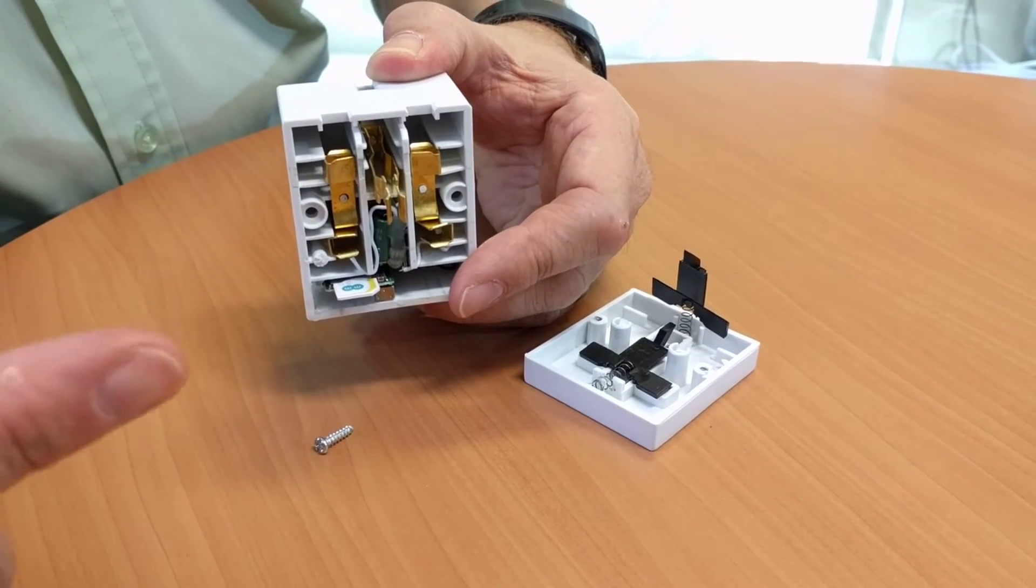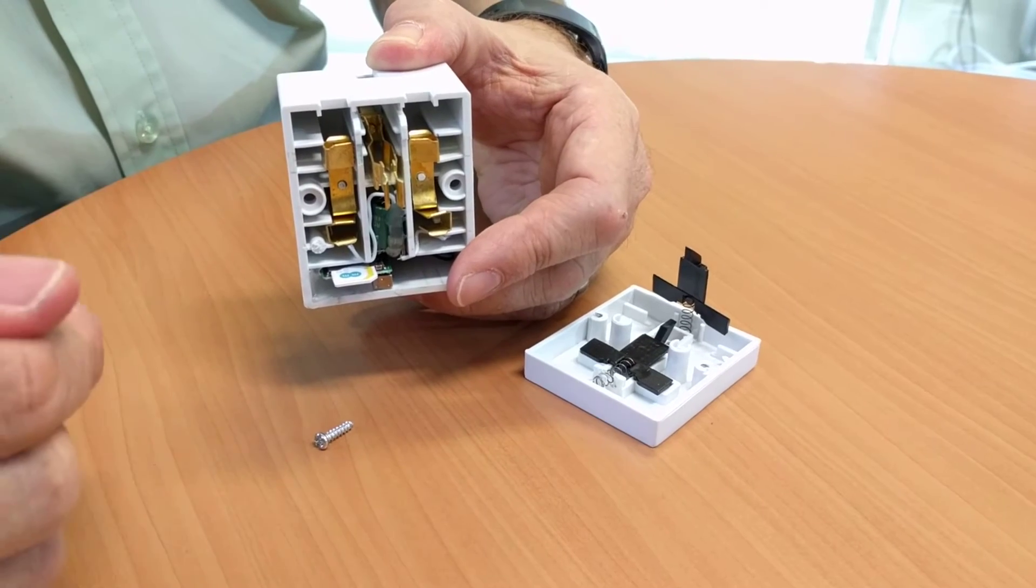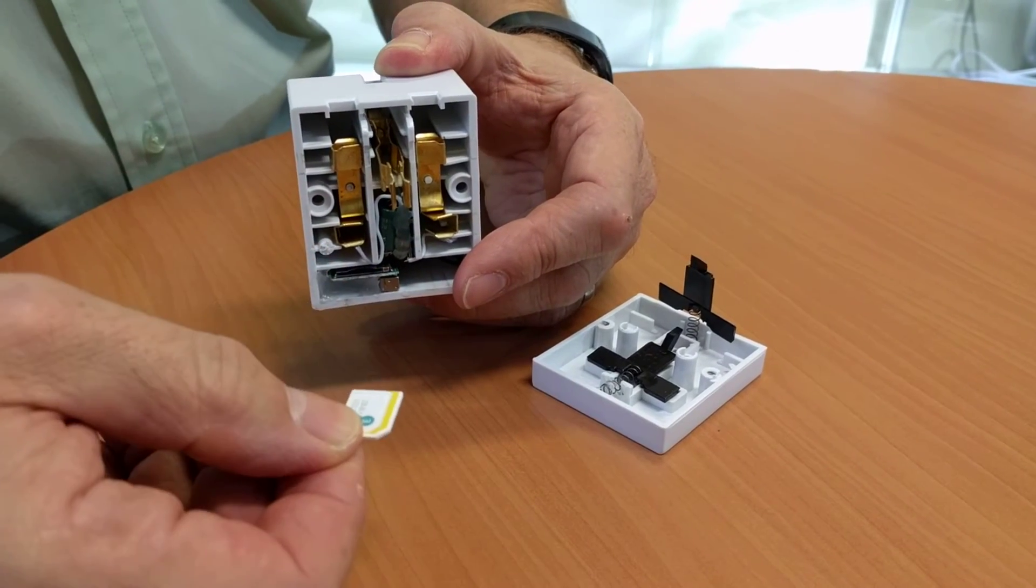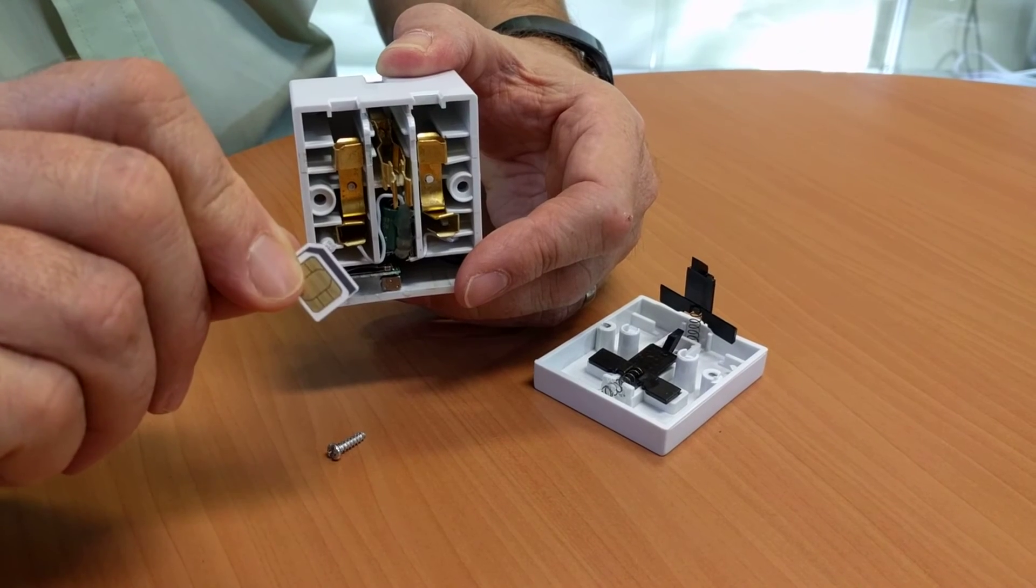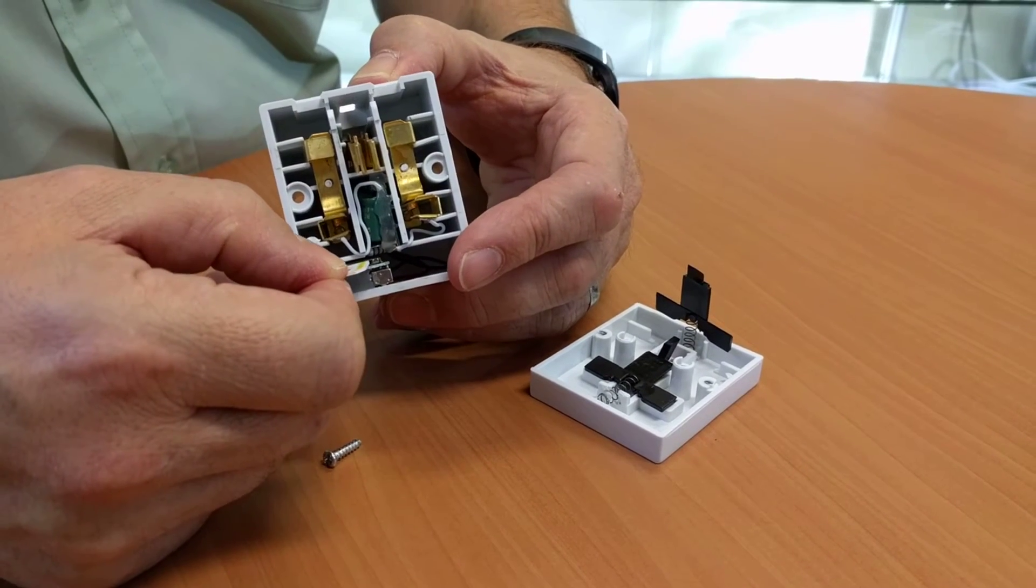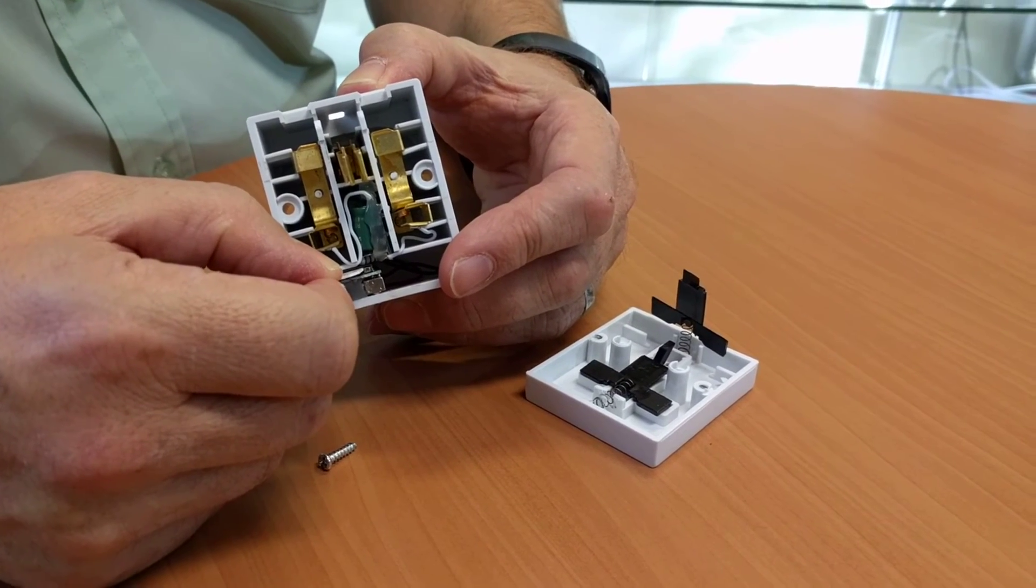So we'll take that out. You see the contacts on the bottom there. And let's put it back in again, albeit you may want to actually change for another SIM.